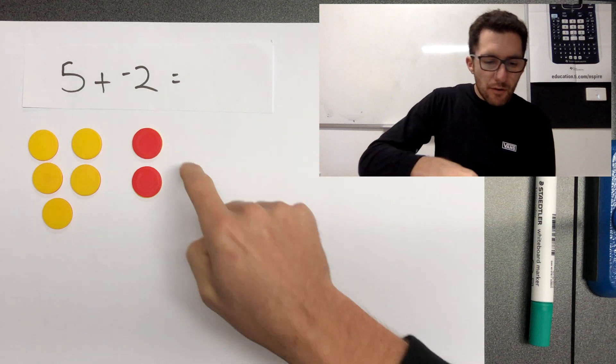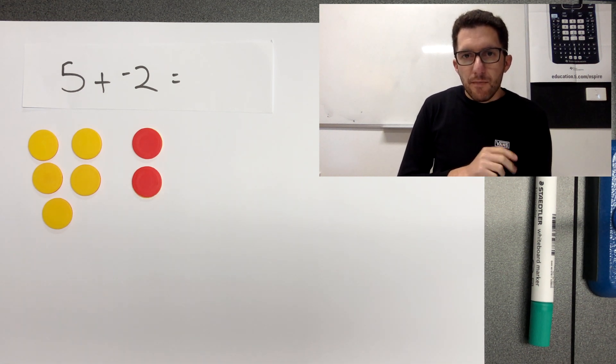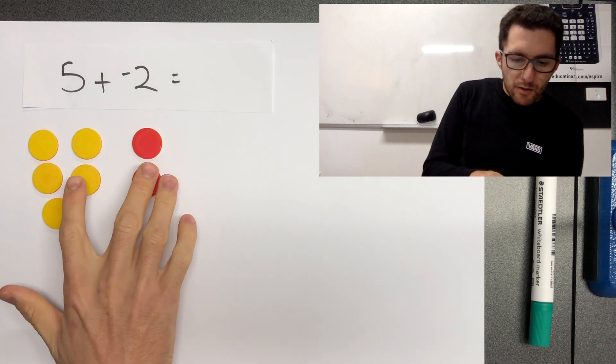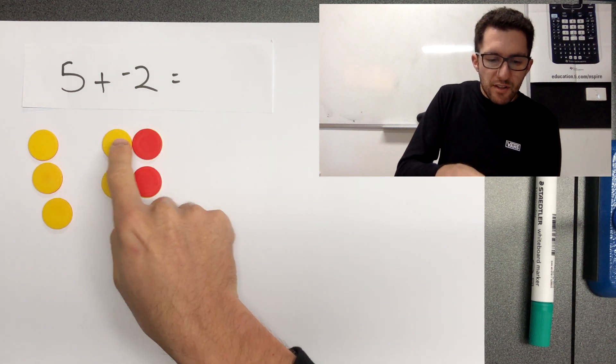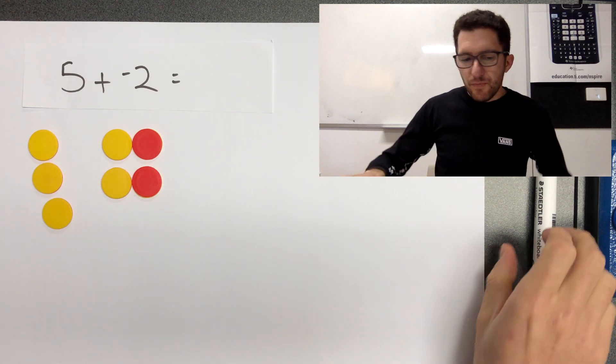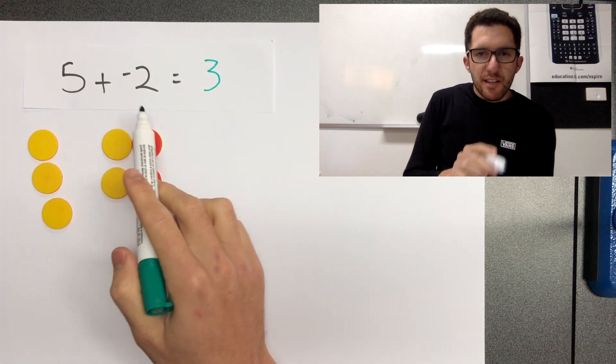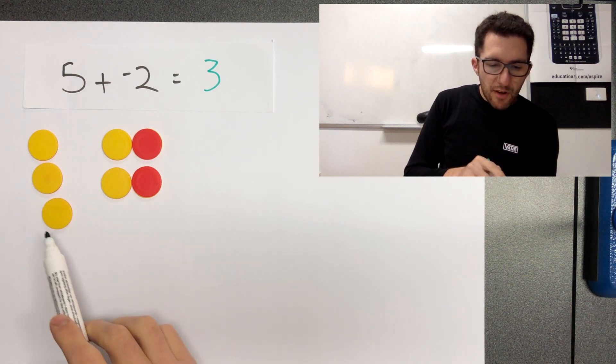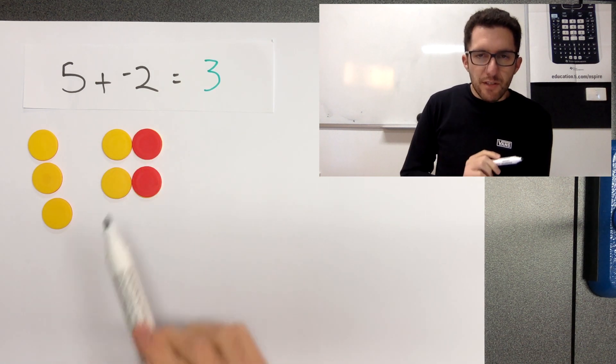What is the value of all these counters? Now remember, the red and the yellow, if they pair up, equals zero. So they are essentially worth nothing. So we can see here we have two zero pairs. So this is zero, this is zero. How many do we have left over here? We've got three. So five plus negative two equals three. And you can still see our five yellow counters here, but we've paired them up with a negative, and so two of those have canceled out.